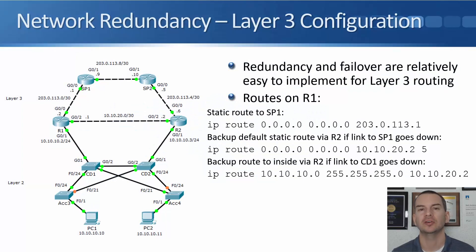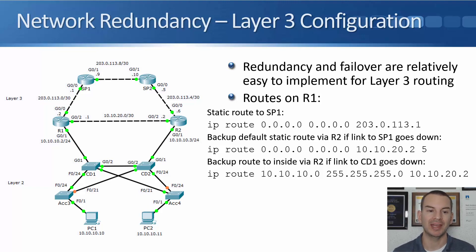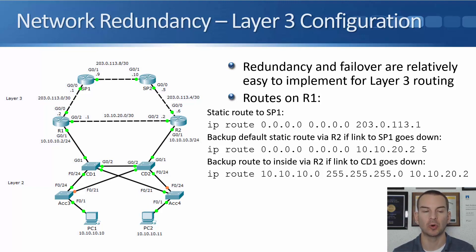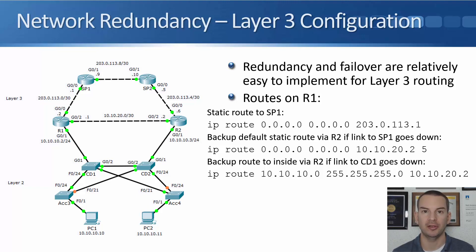In this lecture, you'll learn about FHRP — First Hop Redundancy Protocols. I'll start with a quick review of the routing from the last lecture. Looking at the network topology, R1 and R2 are the default gateways for our PCs. On R1, we've got a default static route pointing up to the service provider router SP1, and it's directly connected to the 10.10.10 network going downstream. If either the upstream link to SP1 or the downstream link to core distribution switch one goes down, we've got backup routes pointing at R2 so it can failover around that outage.